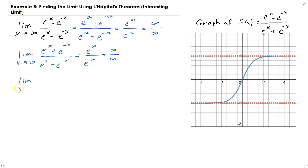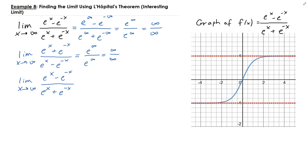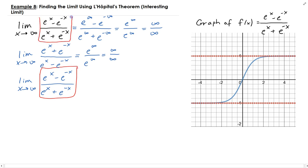Let's apply L'Hôpital's rule again. Taking the derivative of the numerator gives e to the x minus e to the negative x, and the derivative of the denominator gives e to the x plus e to the minus x. But notice — we get back to where we started from. This was the original limit we had, the original function. So when this happens, we need to take a different approach.